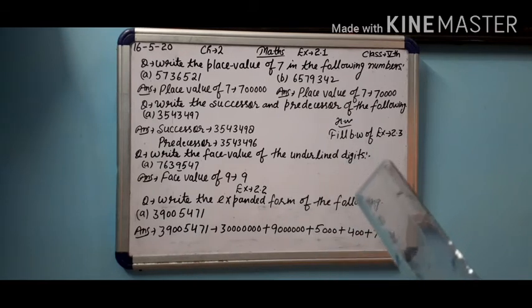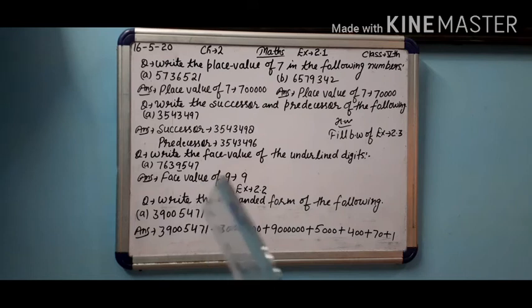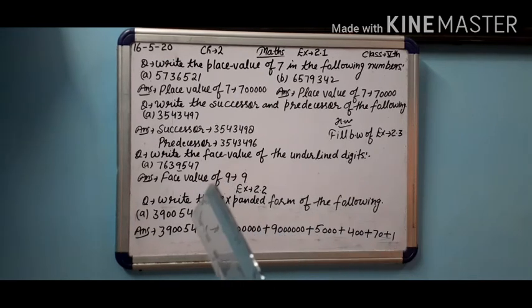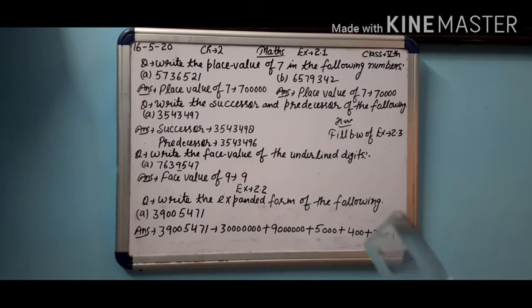After four how many digits? Two digits, so we wrote two zeros. Plus seven. After seven how many digits? One digit, so one zero. Plus the last digit remains the same. I think you understood, it's very easy.